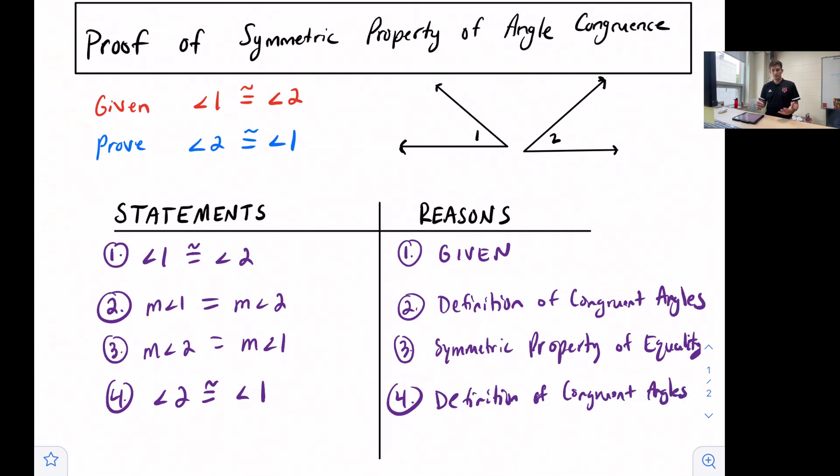A couple things to look at with our two-column proof. Number one, at the top we had this diagram that was listed. So sometimes a diagram will be given to you, sometimes it won't. A good idea is to copy or draw diagrams, label given information to help us develop proofs. Make sure we're not marking anything that is not given to us—it has to be just given information.